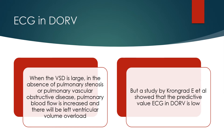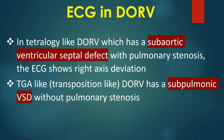A study by Krongrad and Associates showed that the predictive value of ECG in DORV is low. In tetralogy-like DORV, which has a sub-aortic ventricular septal defect with pulmonary stenosis, the ECG shows right axis deviation.